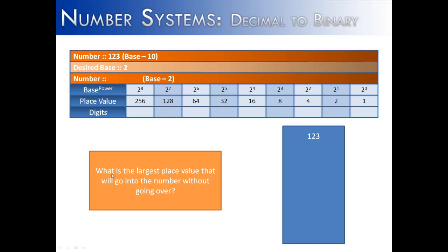What we have to ask ourselves is: what is the largest number that will go into our number without going over? We look to the highest value — 128 is too large because it goes over, so we find 64, and it does go into 123. We put a 1 beneath that in our positional table. Next, we subtract 64 from 123 and get 59. What is the largest number that goes into 59 without going over? That would be 32.